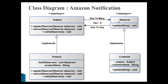The Observer interface has one method: update. The Customer class implements this method. The Customer class has an instance of Subject and a customer name string variable. Whenever the subject state changes, the update method gets executed — through this method call, the actual notification occurs. The Subject has a list of observers (one-to-many relationship), and the Observer class has a Subject instance (one-to-one relationship).